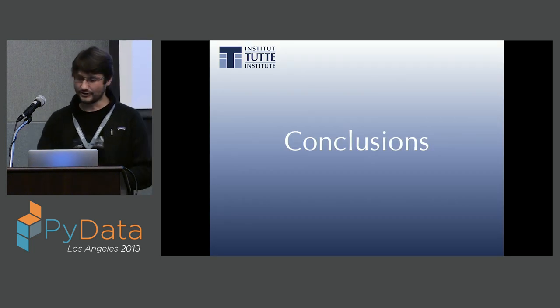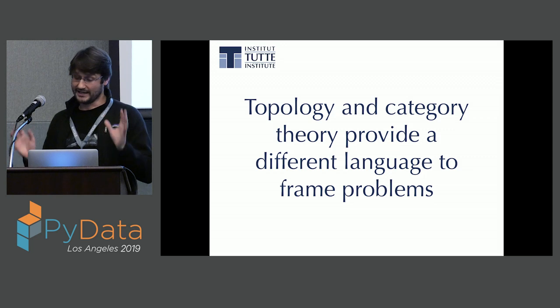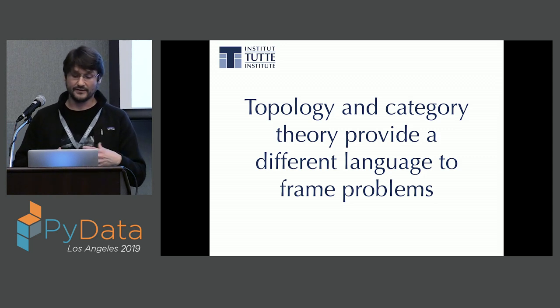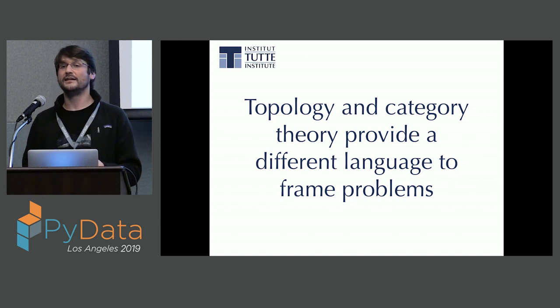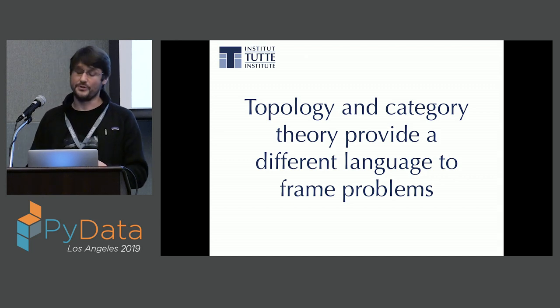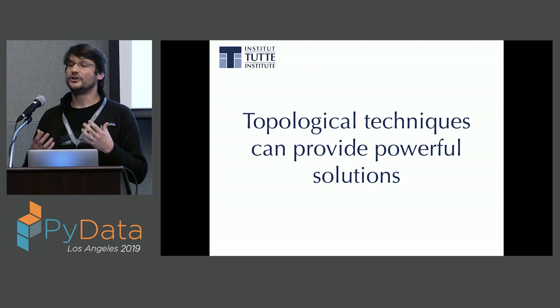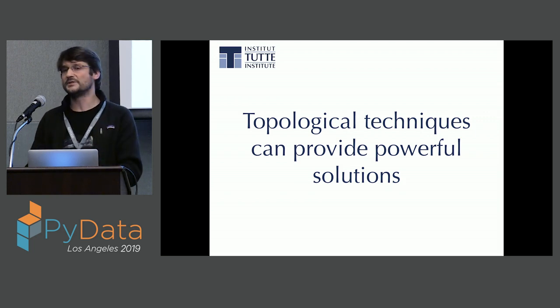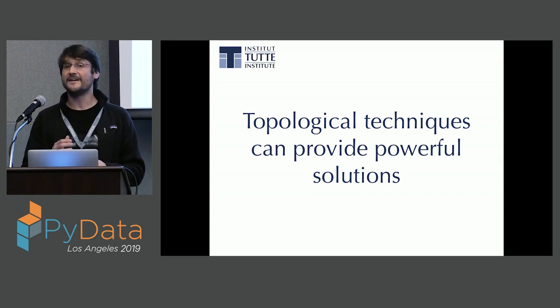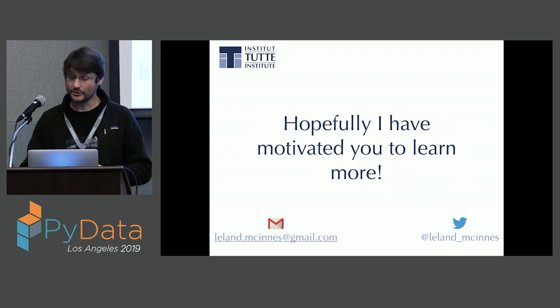In conclusion, topology and category theory provide a different language to frame these sorts of problems compared to standard classical statistical thinking. These are actually very powerful techniques worth using because they help you transfer problems among different ways of thinking in nice, natural ways. In practice they can provide very effective solutions that work on real-world datasets. Hopefully I've motivated you to learn more — these approaches have real value but are often overlooked. Thank you.